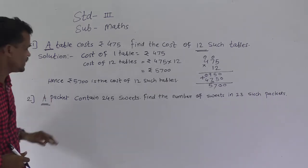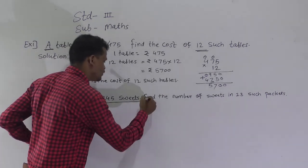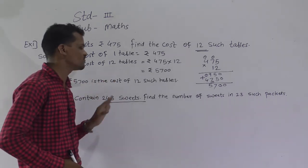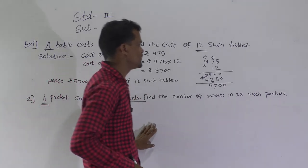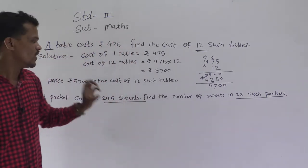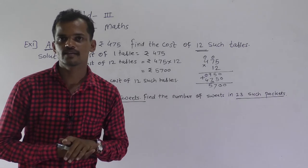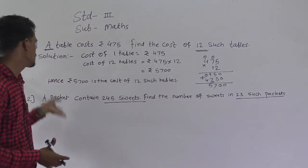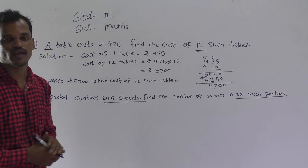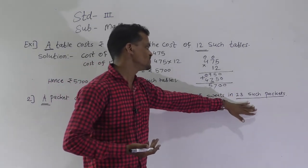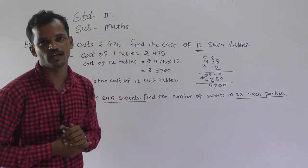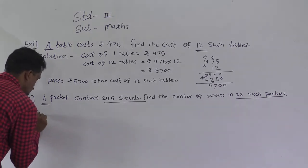Next example: a packet — meaning one single packet — contains 245 sweets. In one packet there are 245 sweets. Find the number of sweets in 23 such packets. Here also one thing is given and we have to find many things, so we do multiplication. In one packet there are 245 sweets and they ask about 23 packets.